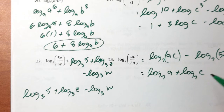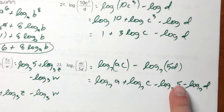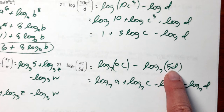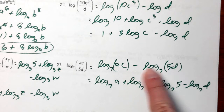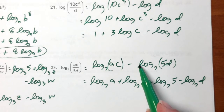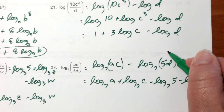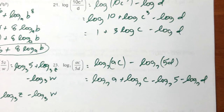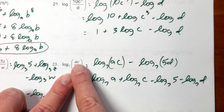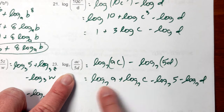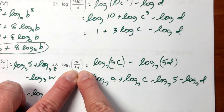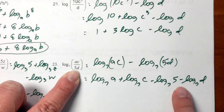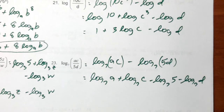Using that same idea here: log base seven of (ac over 5d) — anything on top gets a plus, anything on the bottom gets a minus. So log base seven of a plus log base seven of c minus log base seven of 5 minus log base seven of d. The five and d were being multiplied, but the minus was applying to both parts, so both get subtracted. It's easier to just think: anything on top is positive, anything on the bottom is negative.